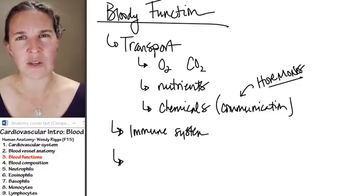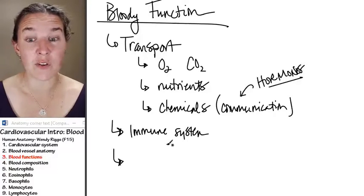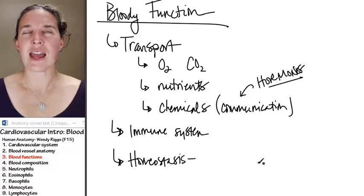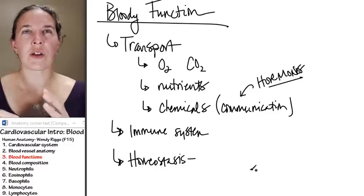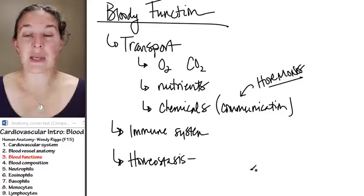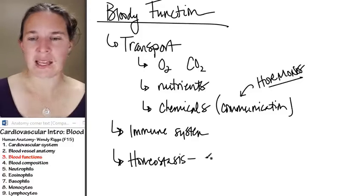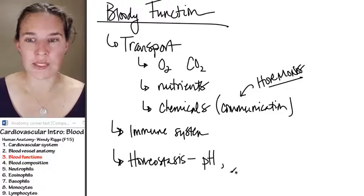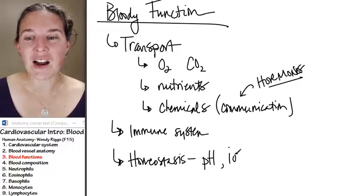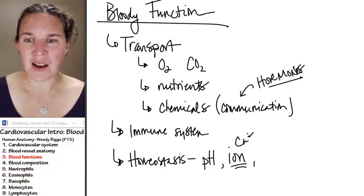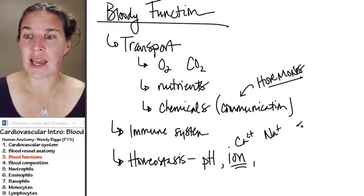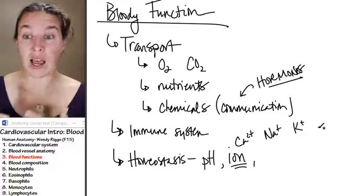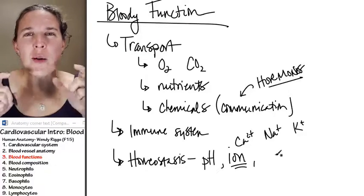But in maintaining the homeostasis of your body in several areas. So let's just put homeostasis and several factors need to be maintained in a homeostatic balance. And for example, your blood helps you maintain pH balance in your whole system. Your blood helps you maintain ion balance, like calcium ions and sodium ions and potassium ions. These things are really important for physiological function, and so your blood helps you maintain those things in the proper levels.